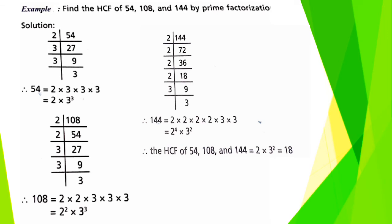In solution, the factors of 54 are 2 × 3 × 3. And the factors of 108 are 2 × 2 × 3 × 3 × 3. And 144 are 2 to the power 4 and 3 to the power 2. Therefore the HCF of 54, 108 and 144 are 2 × 3² is equal to 18.